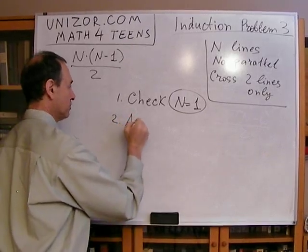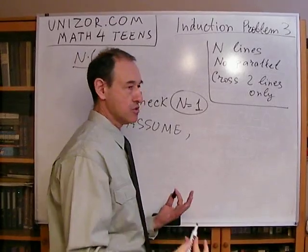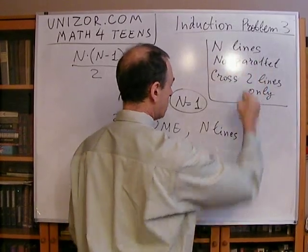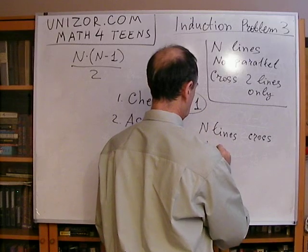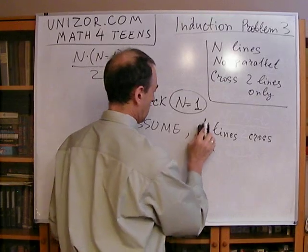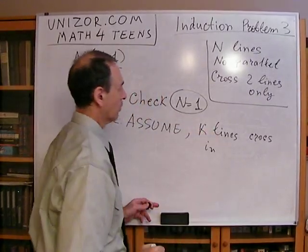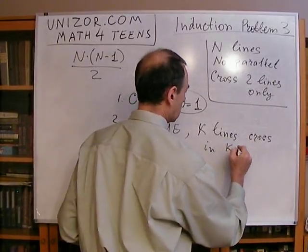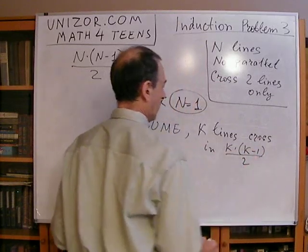Step two: assume. What do we assume? I'll use k instead of n now. Assume that n equals k — that k lines of that type cross in k times (k minus one) divided by two points.